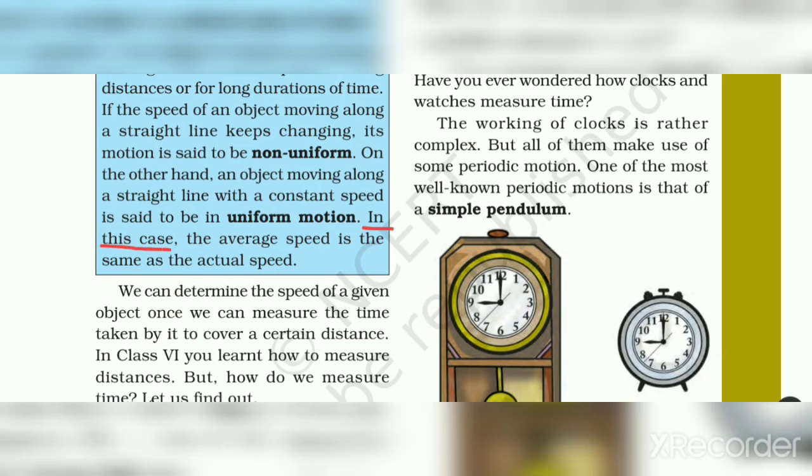In this case, the average speed is the same as the actual speed. To in cases mein, average speed is the same as the actual speed.